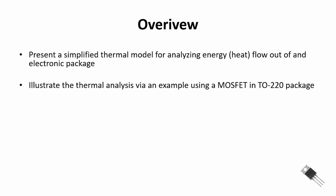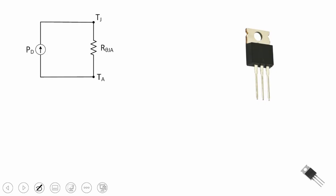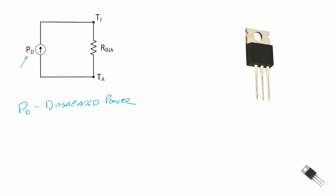Then we're going to illustrate this thermal analysis via an example using a MOSFET and a TO220 package. Let's look at a simplified model. There are a couple of things that are defined in our model. The first one is P sub D, and P sub D is the dissipated power within the device itself. For example, in a MOSFET that dissipated power is going to be our conduction and switching loss in the device.